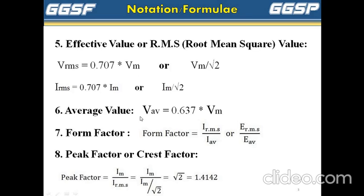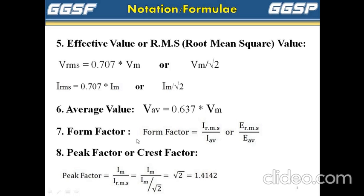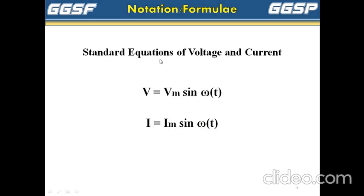Average value is denoted by Vav. Vav is equal to 0.637 into Vm. Form factor is equal to RMS value upon average value. Peak factor or crest factor is equal to peak value upon RMS value. Standard equations are V is equal to Vm sin(ωt) for voltage and I is equal to Im sin(ωt) for current.